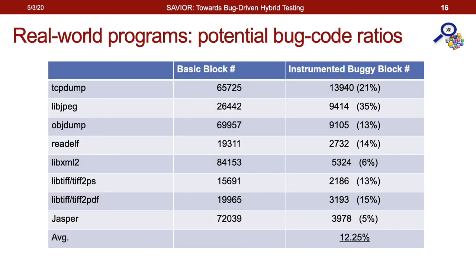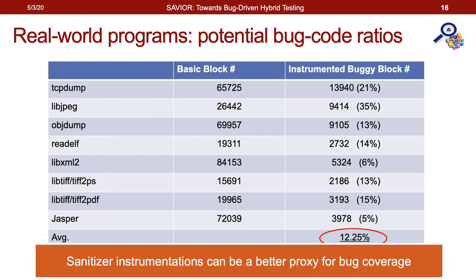Moving to the real-world benchmark, we first test whether sanitizer instrumentation conforms with the bug-to-code ratios shown earlier. As this table shows, on average only 12.25% of the code is marked with high bug potential. We consider this a good proxy for estimating bugs — analogous to code coverage: just as you need to reach the code first to uncover a bug, you need to perform an arithmetic operation first to trigger an integer overflow.